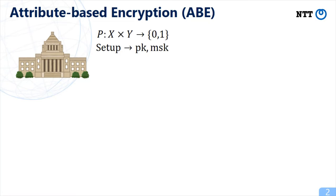Attribute-based encryption is a generalization of public key encryption which specifies a predicate P. A predicate P decides what kind of access control is possible for encrypted data.